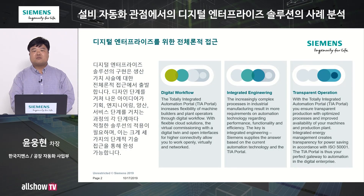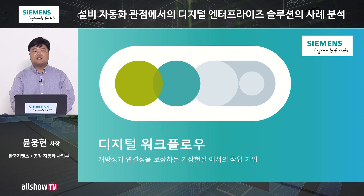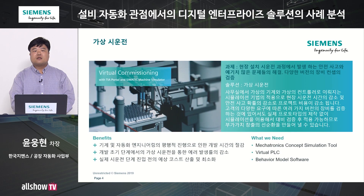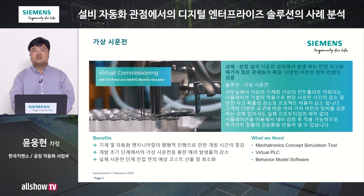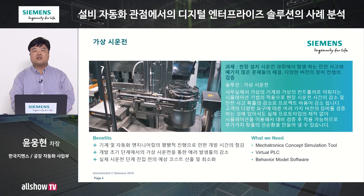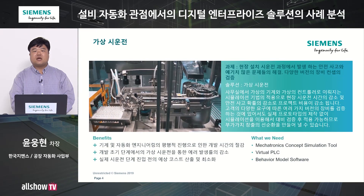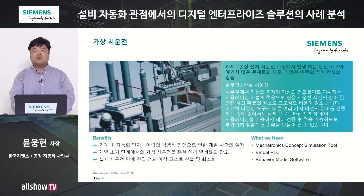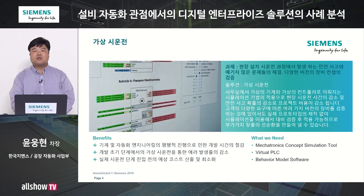이번 시간에는 전체 밸류 체인에 대해 작업 흐름의 디지털화, 통합 엔지니어링, 그리고 운영 정보의 투명성으로 분류해서 각각의 핵심 기술 사례를 보고자 합니다. 디지털 워크플로우는 시뮬레이션 혹은 클라우드 기반의 엔지니어링 등과 같은 기술을 사용해서 작업의 흐름 혹은 작업 환경의 디지털화를 이뤄내는 기술입니다. 이러한 디지털 워크플로우의 기술 적용 사례로 시뮬레이션을 응용한 가상 시운전 기술을 소개하고자 합니다. 이는 장비 혹은 라인의 현장 시운전 과정에서 겪는 여러 가지 어려움을 극복하기 위한 방법이라고 생각하시면 될 것 같습니다.